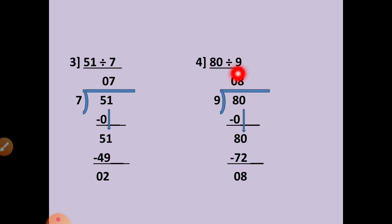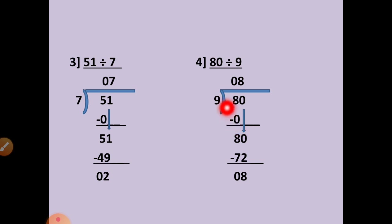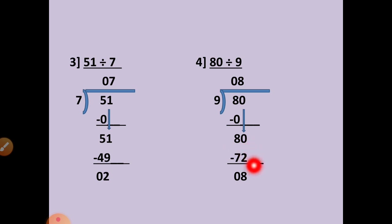Question 4: 80 divided by 9. Again, this number is smaller than the divisor, so we will take the table of 9 zero times. 9 zeros are 0. 8 minus 0 equals 8. Copy the next number down. Now this number is 80. In the table of 9, 80 is not there, but the smaller number is there. 9 eights are 72. 80 minus 72 equals 8.